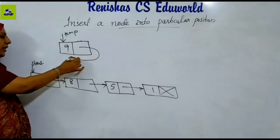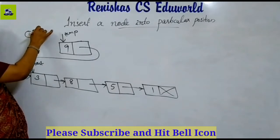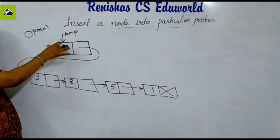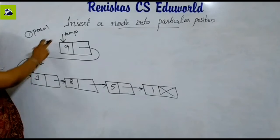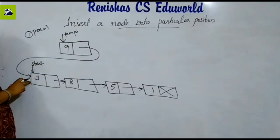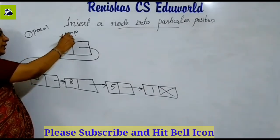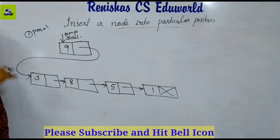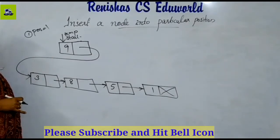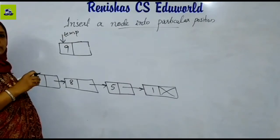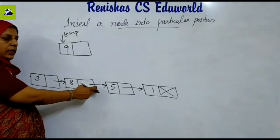The next node points to the third position. We have to point to the third position. Start is the third position. If position is equal to 1, then temp is the starting point. We want to point to the third position and insert there.